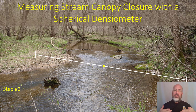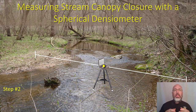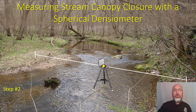Step two: once you have a transect set up, find the center point of that transect, then set your spherical densitometer at that center point. You can see that we have our setup on a tripod, and there are multiple reasons for that. The first is that the spherical densitometer needs to be level to work properly — there's a bubble level on it — and a tripod makes that a lot easier.